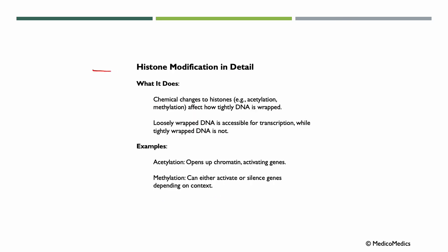The second way was to do histone modification. Here we are talking about chemical changes to histones affect how tightly DNA is wrapped. We know that loosely wrapped DNA is accessible for transcription. Essentially to continue to produce proteins and move into translation. If we can find a way to tightly wrap DNA, it will not be accessible for transcription.